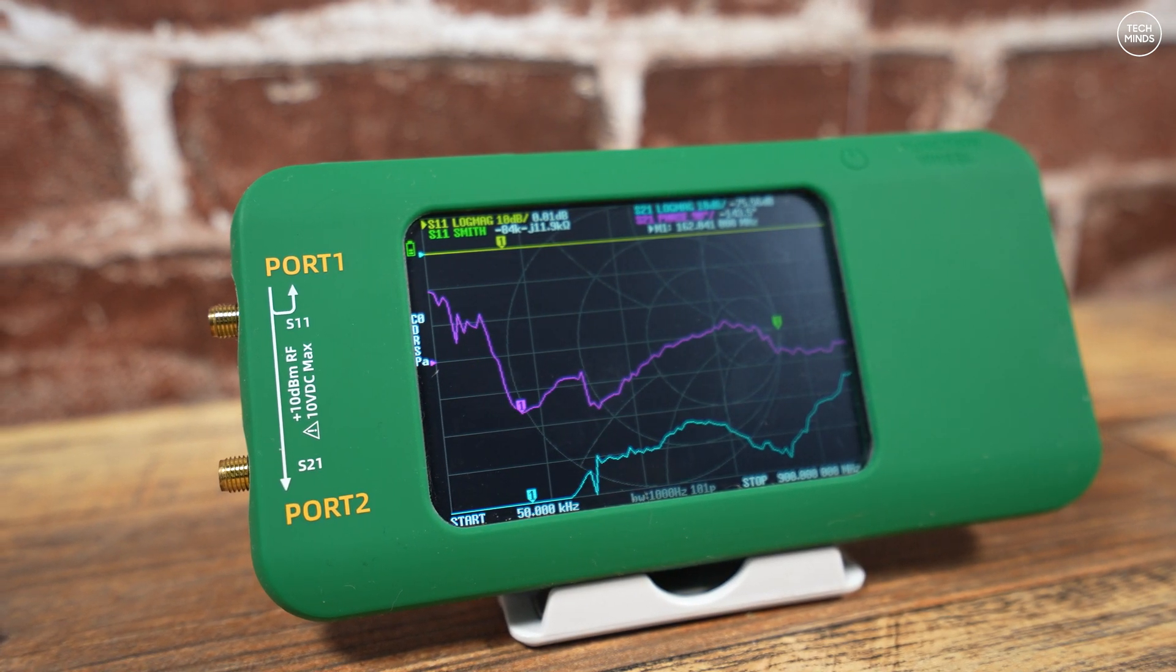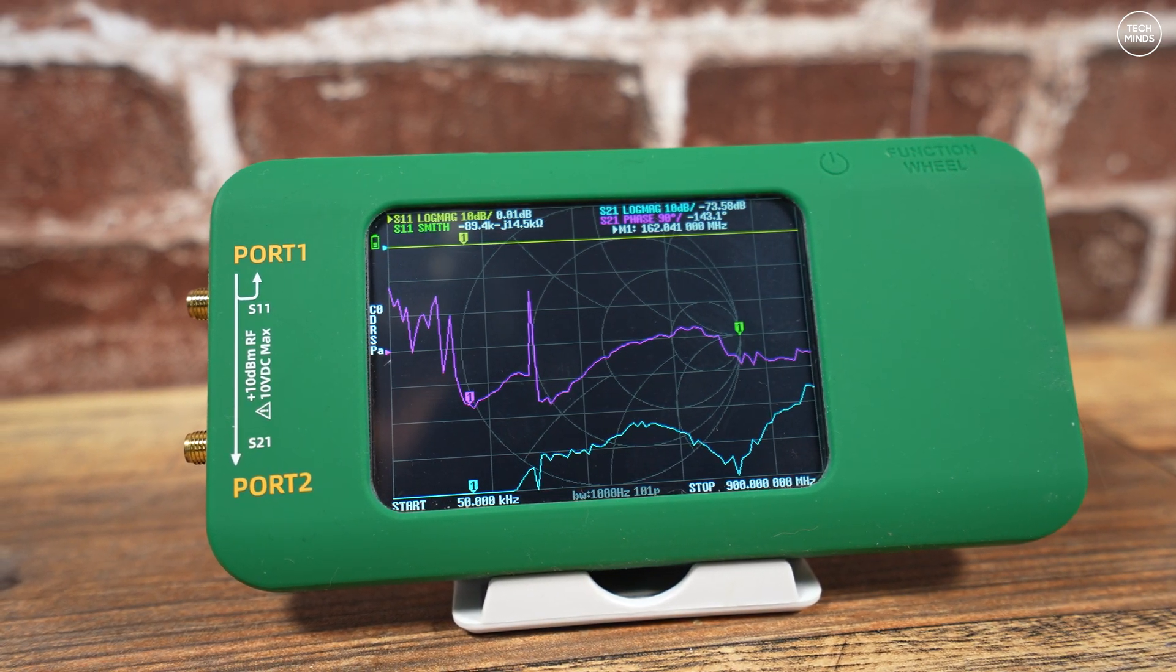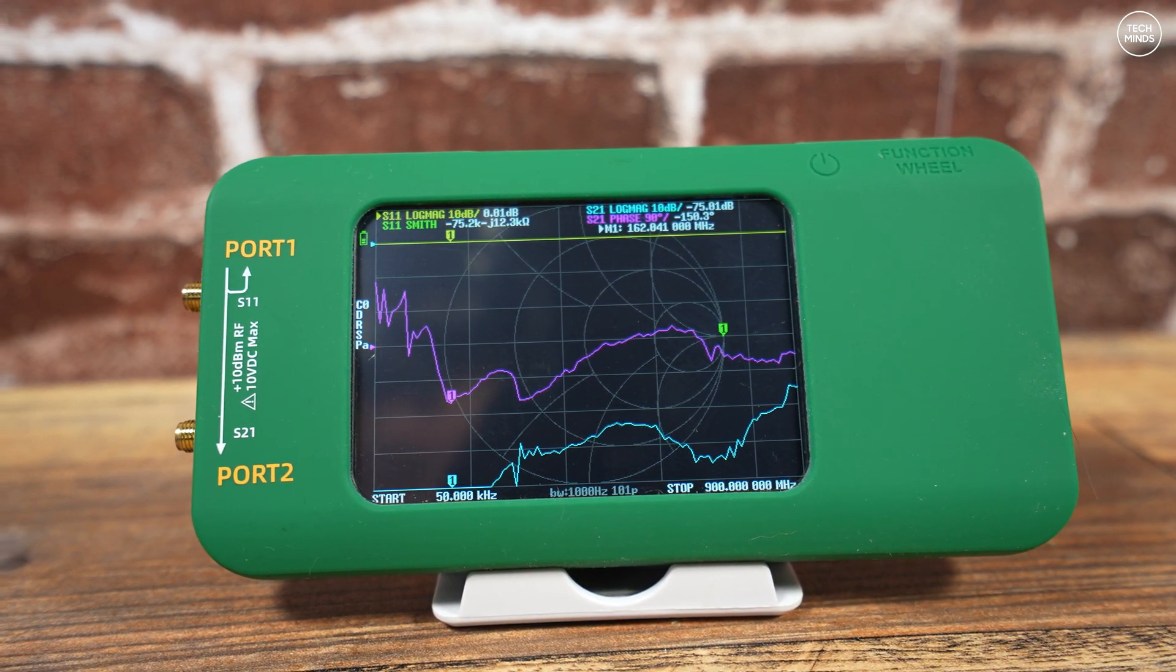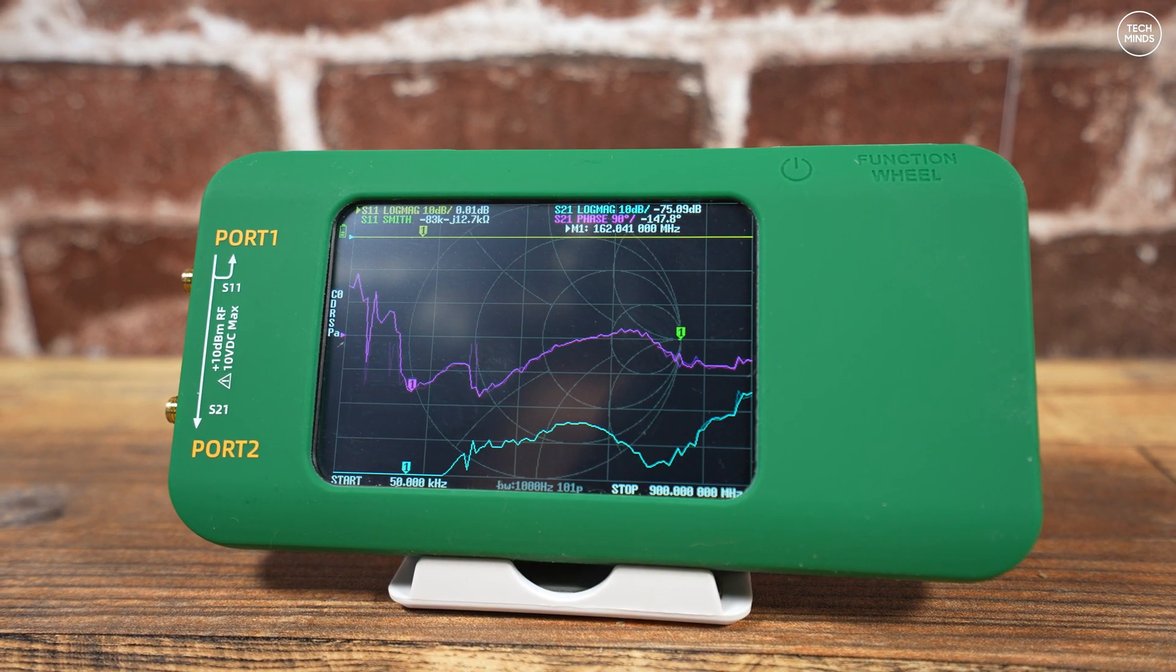This will be a short video because I've covered many VNAs on the channel before, and to be honest apart from the case it's nothing new that we've not seen before. So this little VNA covers from 10 kilohertz to 1.5 gigahertz, so useful for most of us hams that use HF, VHF, and UHF.